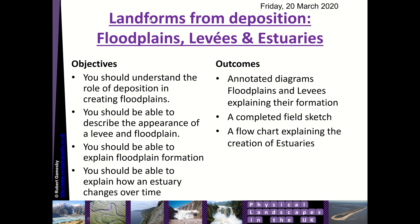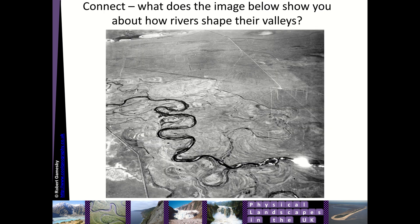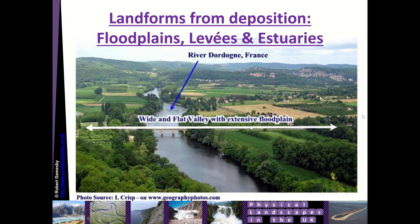Today we're going to be learning about more landforms — landforms from deposition. In this case it's going to be floodplains, levees, and estuaries. There's a little connect activity for you to look at to get you started: what does the image show you about how rivers shape their valleys? Pay particular attention to all these scars on the land — based on the last lesson on meanders, why would those scars exist and why is that land so flat?